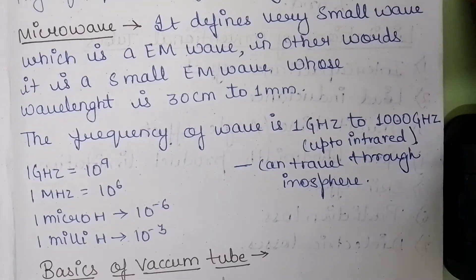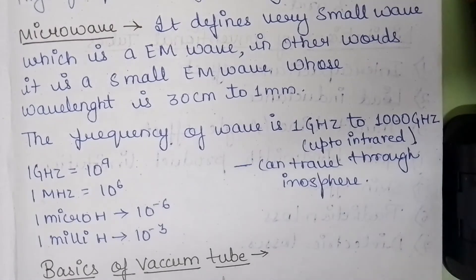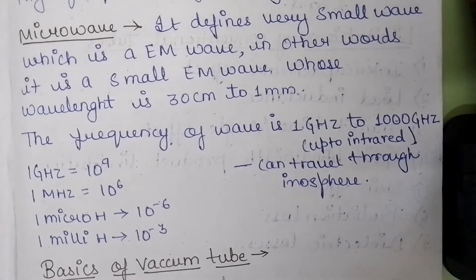Its frequency range is from 1 gigahertz to 1000 gigahertz and it can travel through the ionosphere layer of the atmosphere. So these are some values: 1 gigahertz is equal to 10 to the power 9, 1 megahertz is equal to 10 to the power 6.